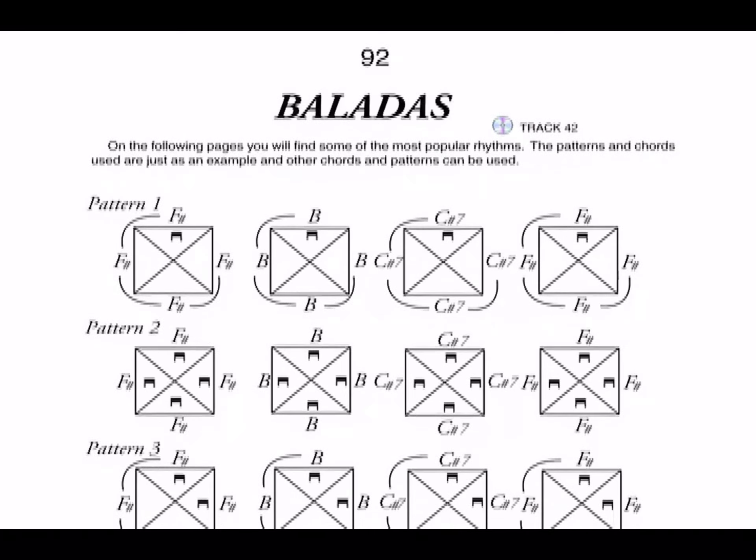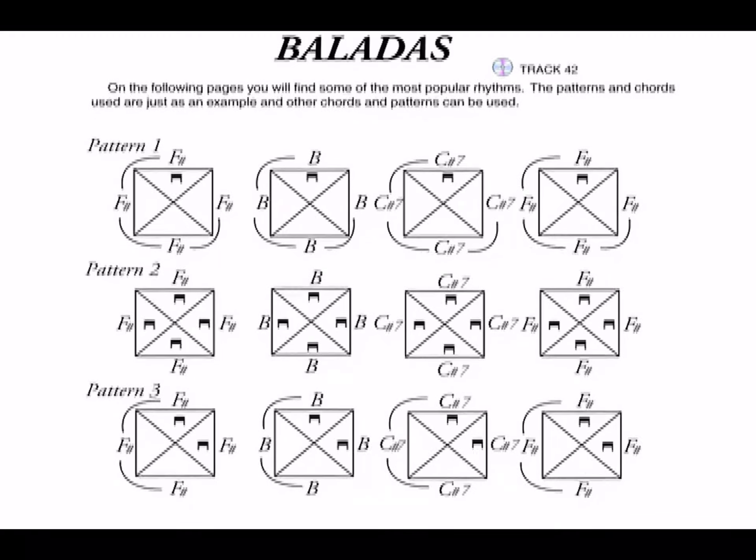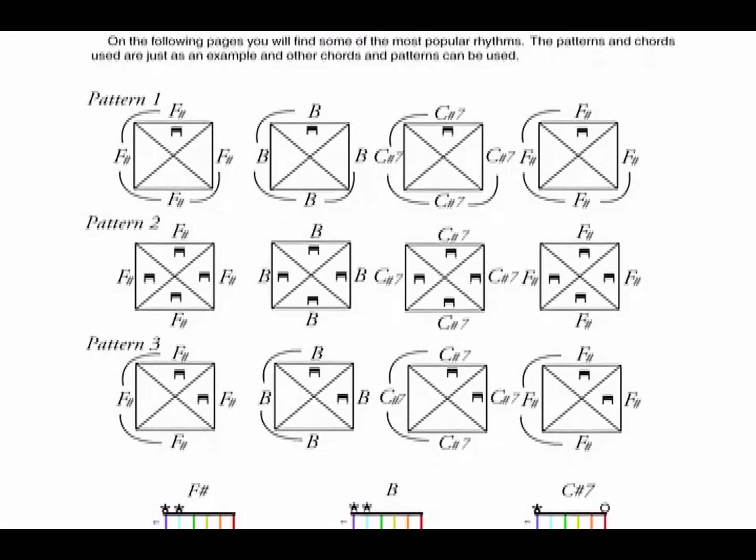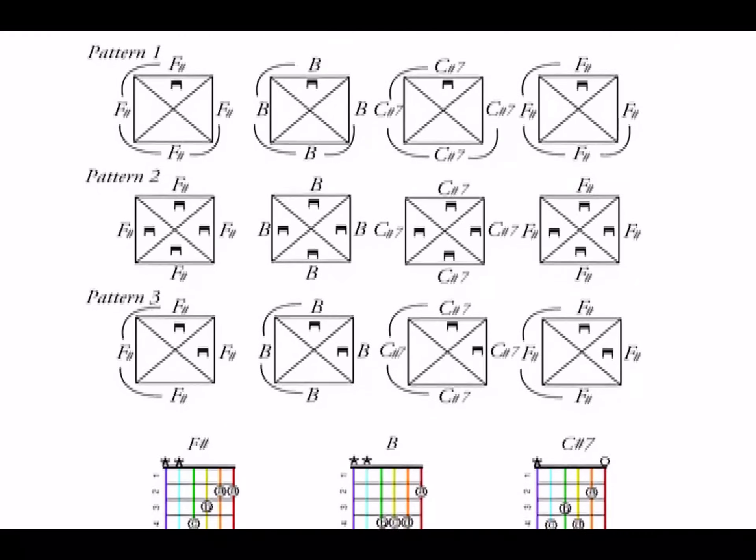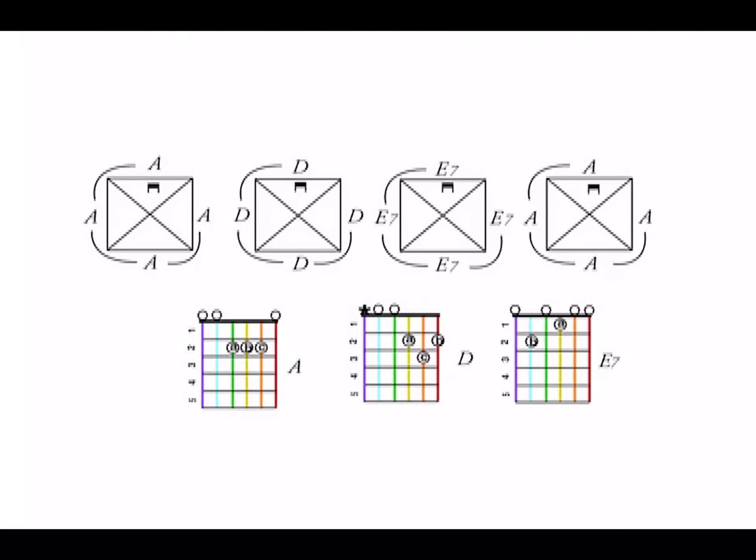From page 92 to 113, we show you examples of rhythmic patterns, which are also included in the CD. For practice, you can also use with these a combination of chords, like the chord of La, or A, on page 137. Let's play the first example of ballad rhythm with a combination of chords, La, or A.